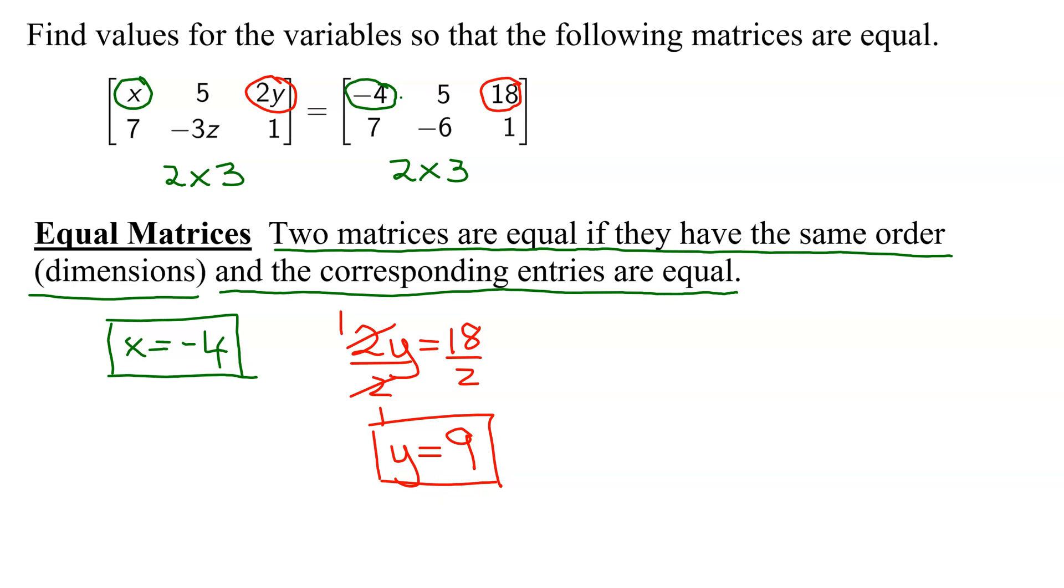The last variable we need to find is z. So here's negative 3z. It is in row 2, column 2. So we know negative 3z has to equal the element that is in row 2, column 2 of the matrix on the right. So I know negative 3z has to equal negative 6. Divide both sides by negative 3. We get z equals negative 6 divided by negative 3 is positive 2. So z equals 2.